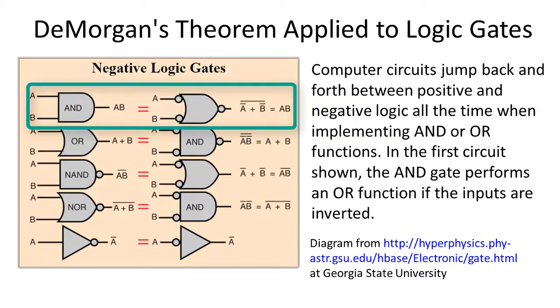Computer circuits jump back and forth between positive and negative logic all the time when implementing AND and OR functions. In the first circuit shown, the AND gate performs an OR function if the inputs are inverted. Although it would not be very efficient, an entire computer could be built using only NAND gates.